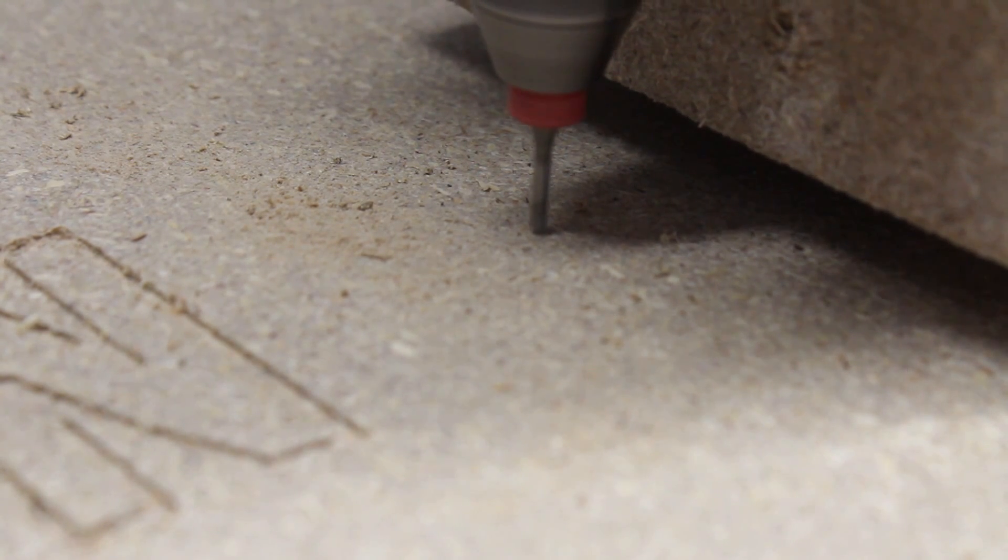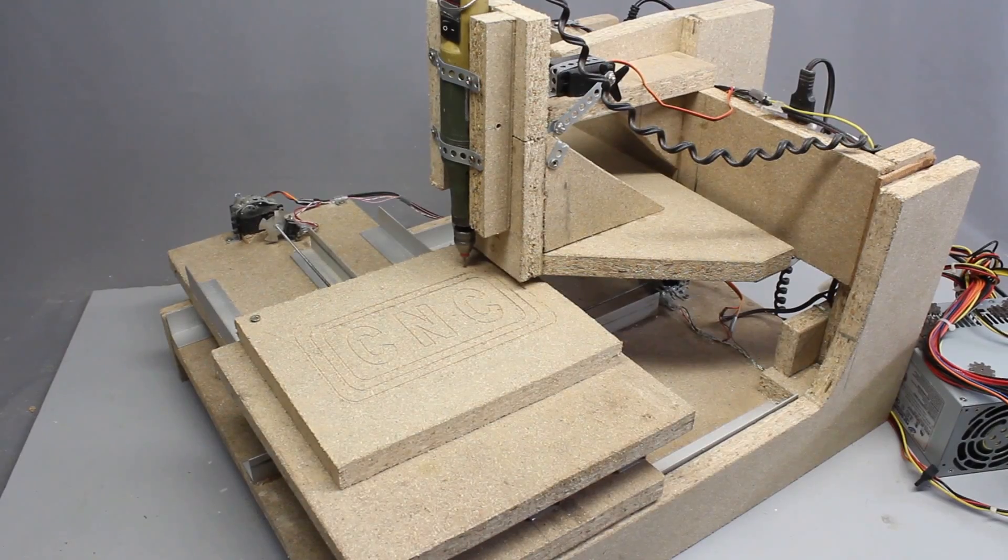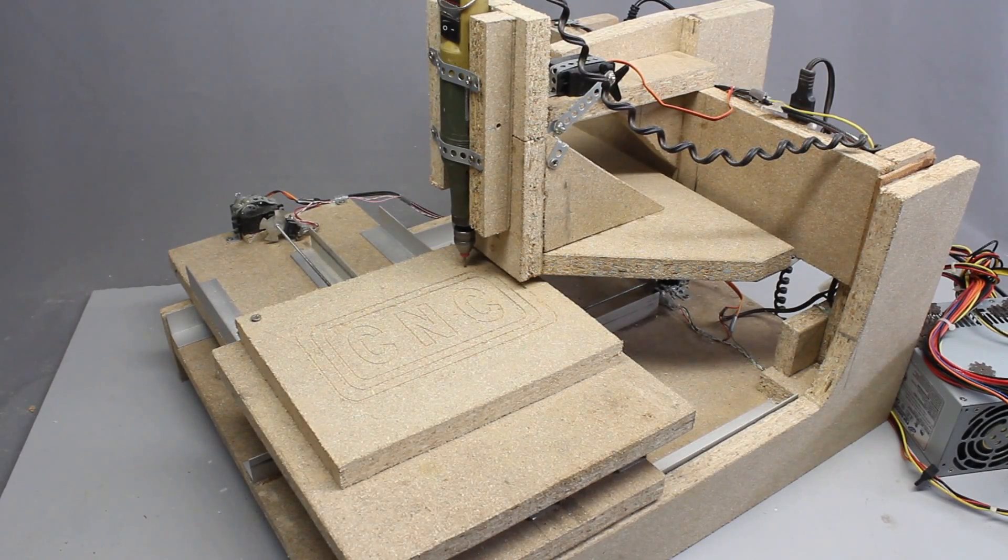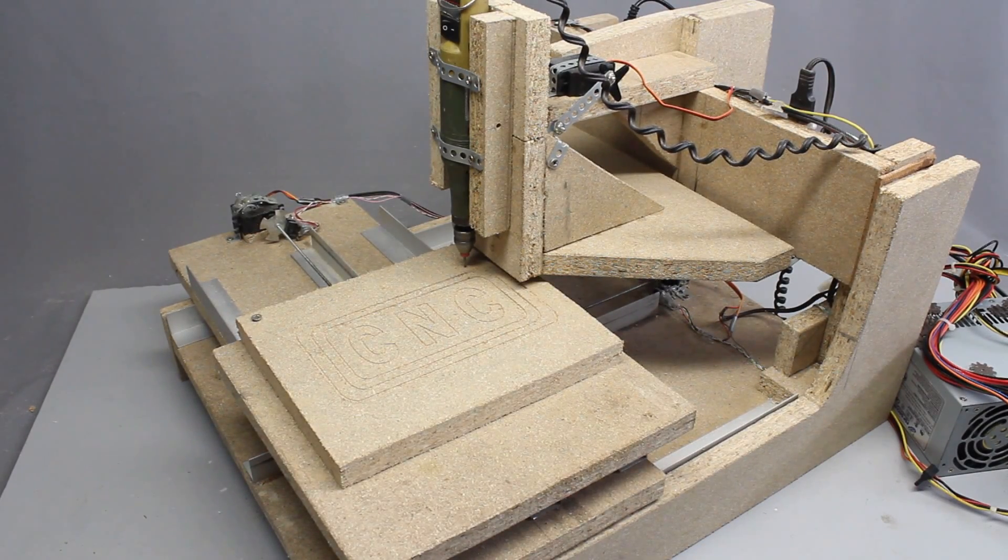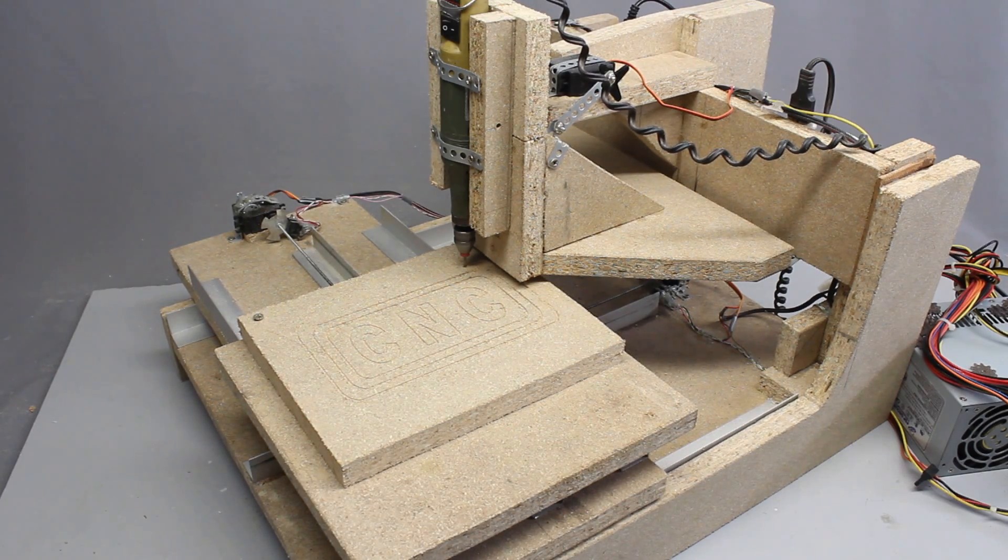This video is about a simple to build CNC machine. The machine has a work area of 20x20cm and a base area of approximately 50x60cm.